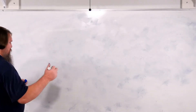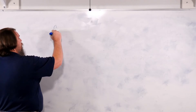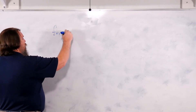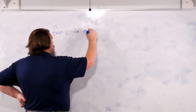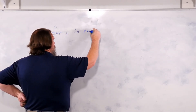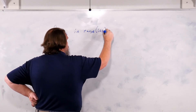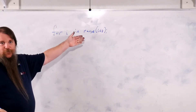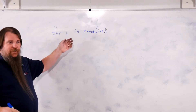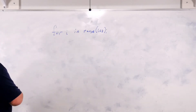In the previous video, I showed you that you could say `for i in range(100)`, which would make i equal to 0, then 1, then 2, then 3, all the way down the line.